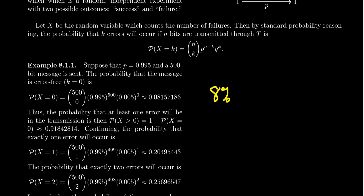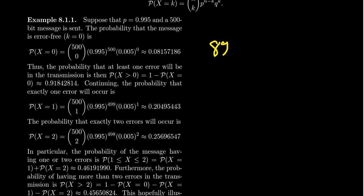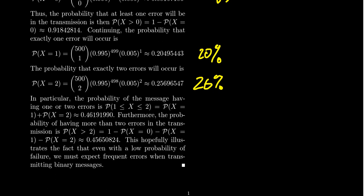Let that sink in. There is only an 8 percent chance that this 500-bit message would be sent with no errors whatsoever. So we should anticipate errors. The complement of that is there's a 92 percent chance that there will be at least one error in the transmission. What's the probability of having exactly one error? If we do the calculation, the probability when X equals one, we get about a 20 percent chance. And for X equals two, there's about a 26 percent chance of having exactly two errors. So when you put that together, there is a 46 percent chance that there will be one or two errors.